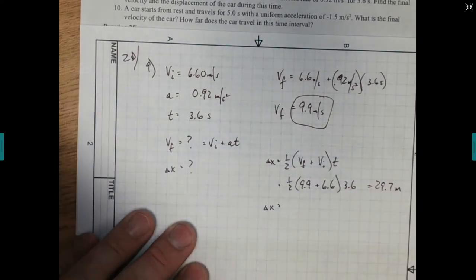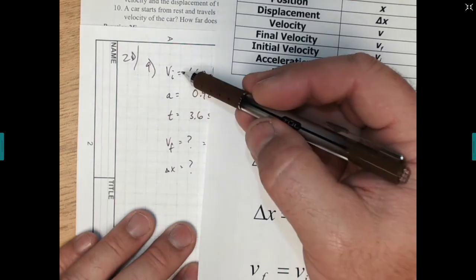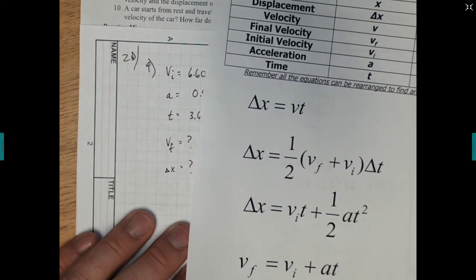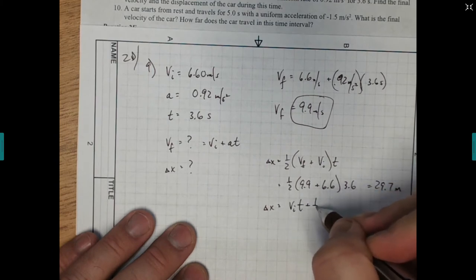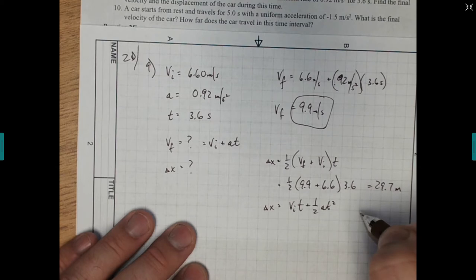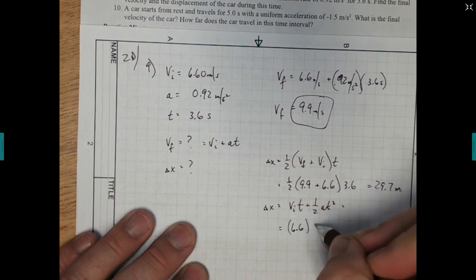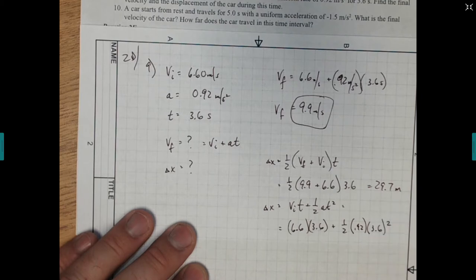And the other one, we put delta x. And we had this other equation for delta x, which we think we had all the information. This is the information we had initially. We had the initial acceleration and time. So let's try that one. So it's VIT plus 1 half AT squared. We're just going to punch our numbers in there. So velocity initial was the 6.6. We're going to multiply that by the 3.6 seconds for time.